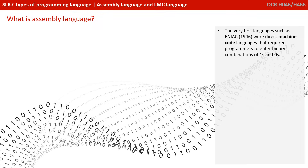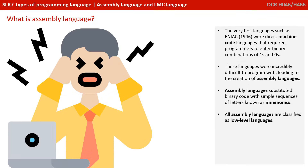The very first languages were direct machine code languages that required programmers to enter binary combinations of ones and zeros. These languages, of course, were incredibly difficult to program with, and this quickly led to the creation of assembly languages.